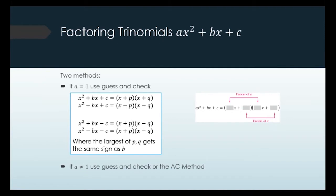Starting with when a is one, so you just have an x squared — that's guessing and checking, and it's basically reverse FOIL. It will turn into two sets of binomials, and you'll have an x in the first term for both. If everything is positive, both numbers are positive. If b is negative and c is positive, both numbers are negative. If c is negative, one number is positive and one is negative, and the sign of b determines which is which.